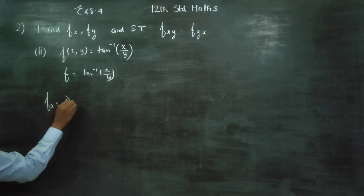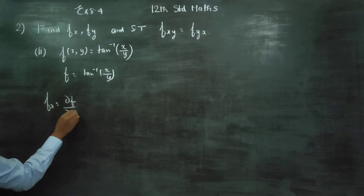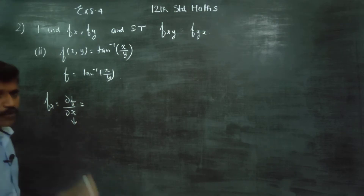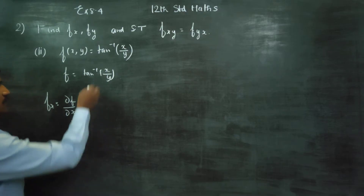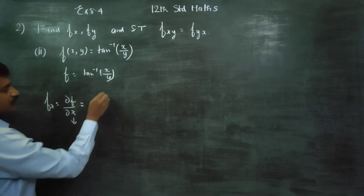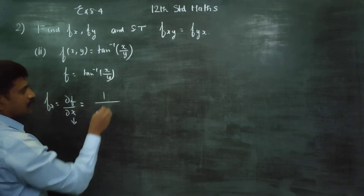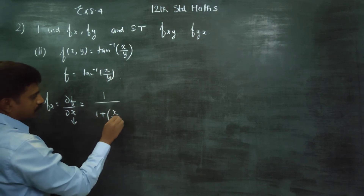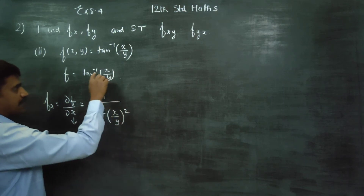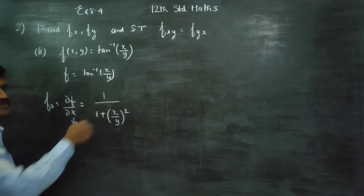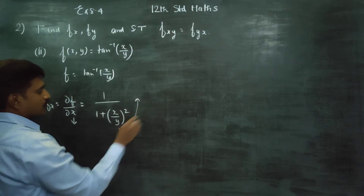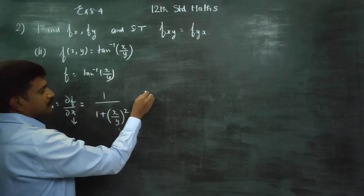fx means dou f by dou x — partial differentiation, y is constant. Differentiating tan inverse: 1 by 1 plus x square. Tan inverse x differentiate using chain rule — x by y differentiate.